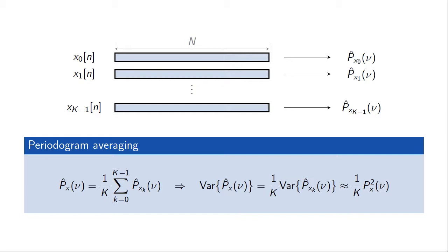Let's begin by considering the concept of periodogram averaging. Previously we assumed we had a block of N samples from a process, which were the basis for our estimate, be it the periodogram or the modified periodogram. However, if we had K such blocks of data, we could compute an estimate of the power spectral density from each block, and then create a more reliable estimate by averaging all of these individual estimates.